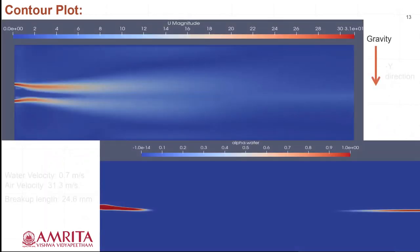Coming to contour plots. The top contour plot is the velocity plot for which water and air velocities are 0.7 and 31.3 m/s respectively. From the plot, we can observe that how water is getting affected by the air which has higher velocity compared to the water. And water velocity is getting reduced with respect to the control volume length. Because of the interaction between the air and water, the liquid jet is breaking into spray. The below contour plot for the alpha dot water, that is concentration of the water. The value varies from 0 to 1, whereas 0 represents the water is not present and 1 represents the water is present. The breakup length is found out to be 24.6mm.